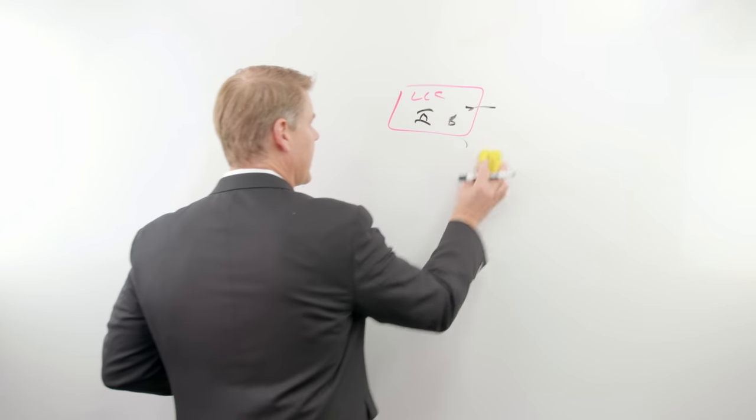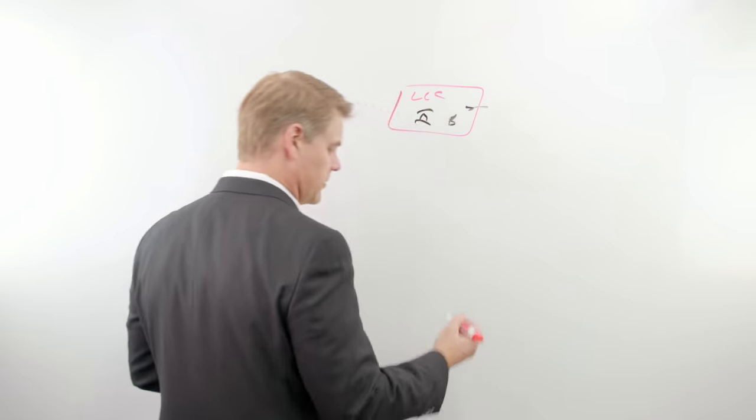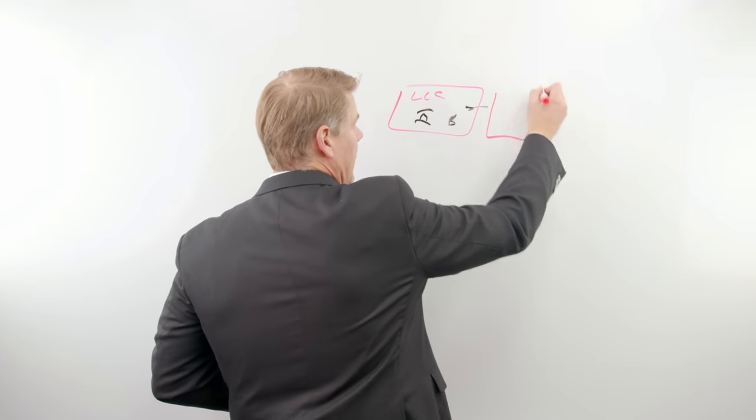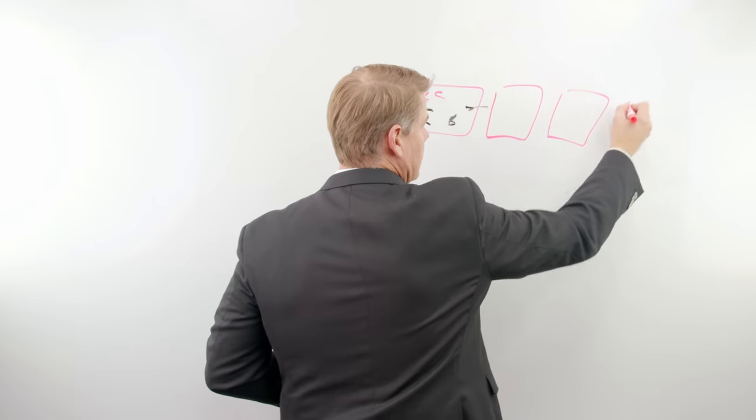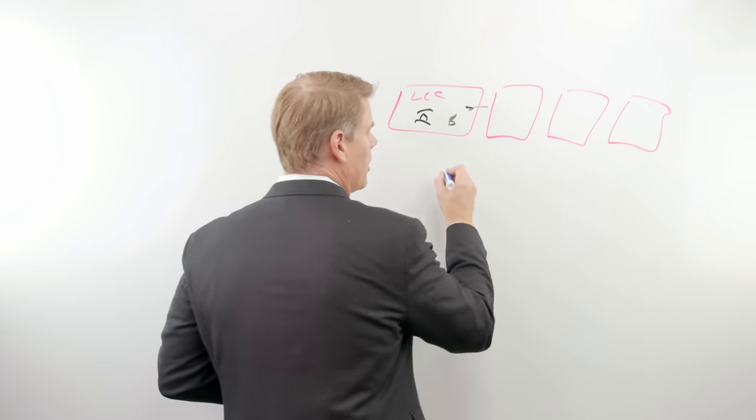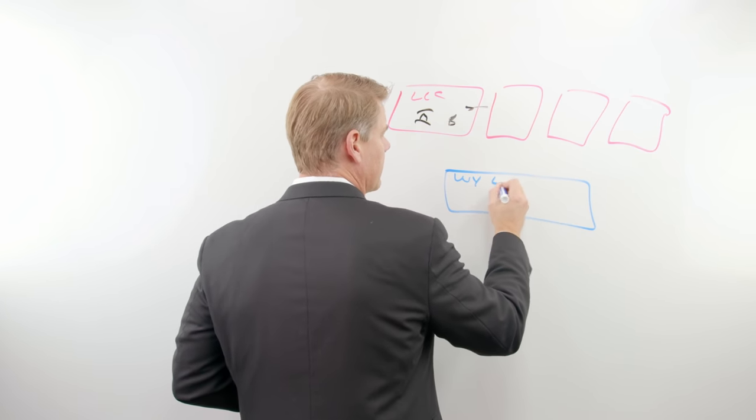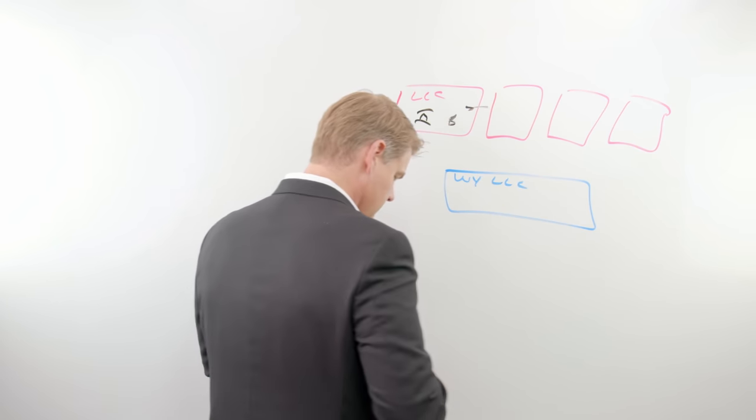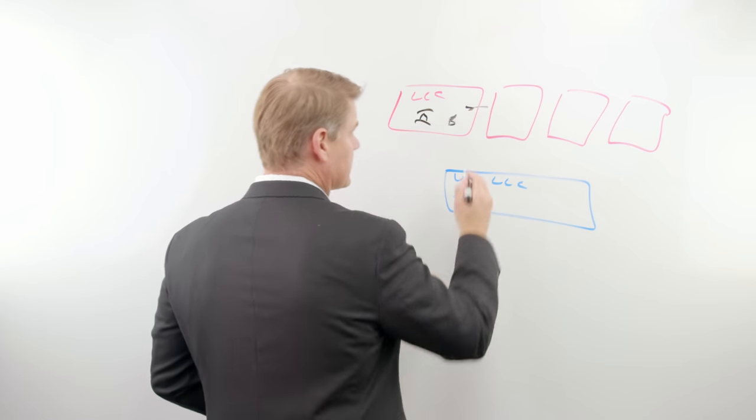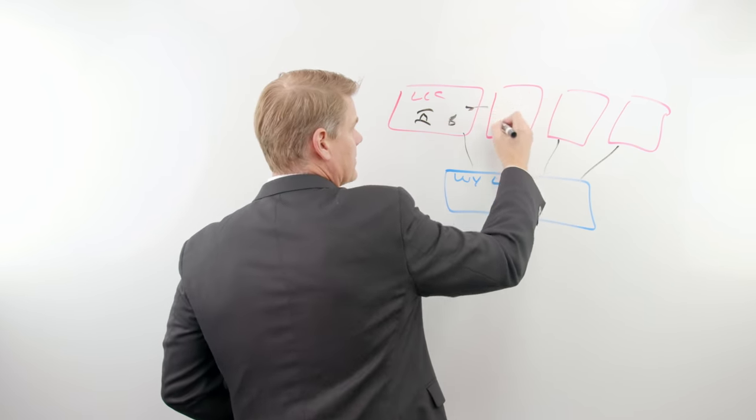Now where things start to change is when you start to grow your structure out. You start adding on additional limited liability companies here. So now we've got four LLCs and then you bring on that Wyoming company down here, like this. So in this case, I run into people all the time. They're in this scenario. They got these LLCs set up.